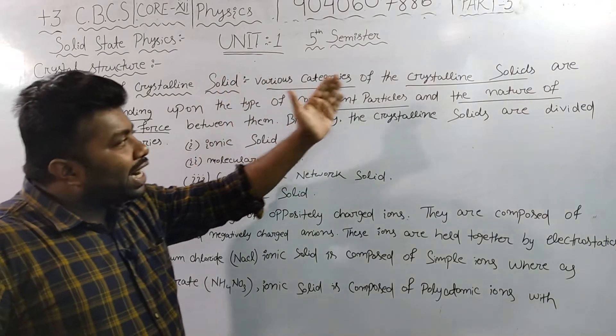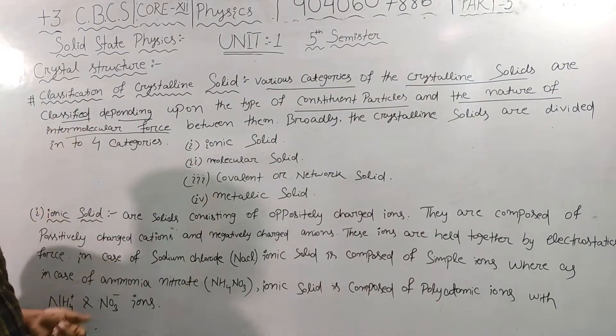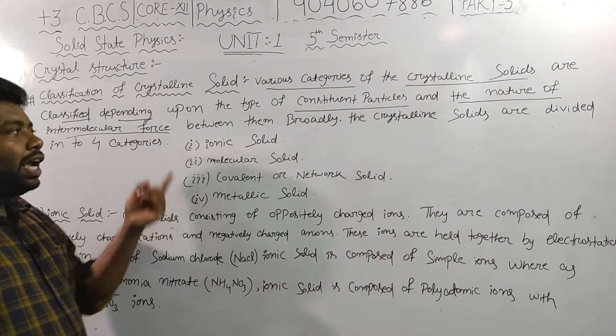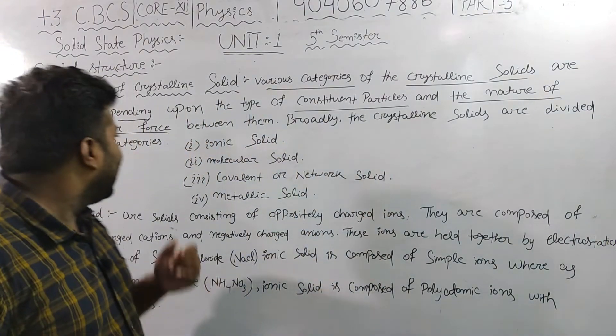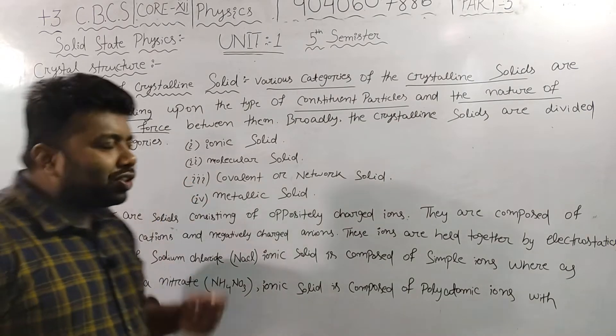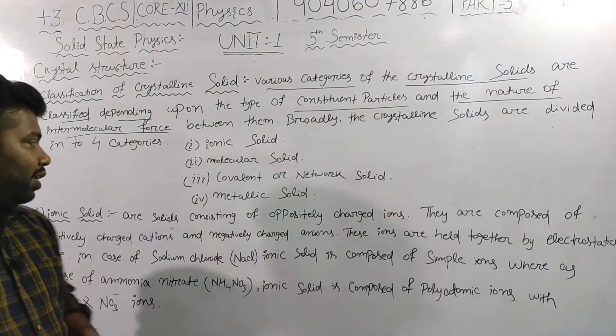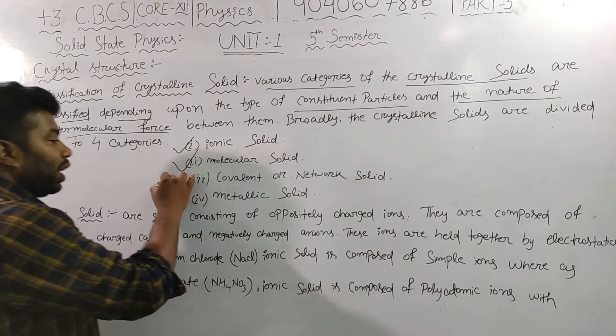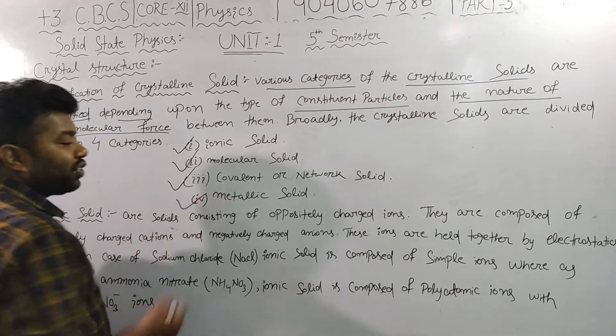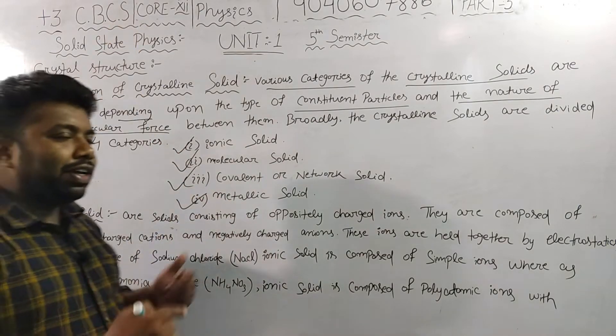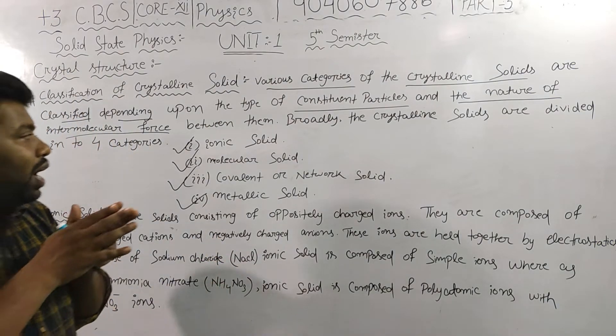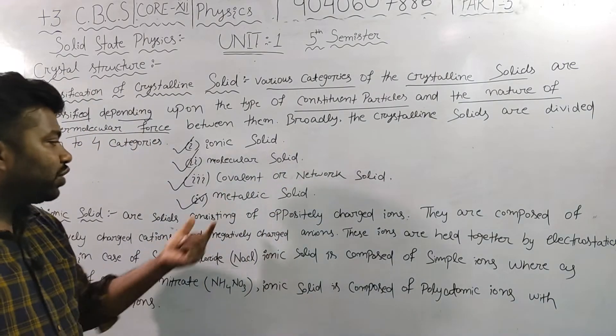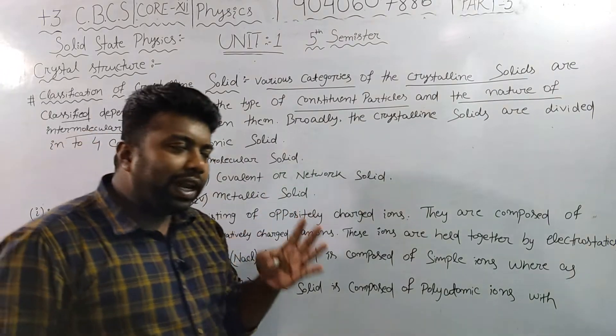Various categories of crystalline solids are classified depending upon the constituent particle and the nature of the intermolecular force. Broadly, solids are divided into four categories: ionic solid, molecular solid, covalent and network solid, and metallic solid.